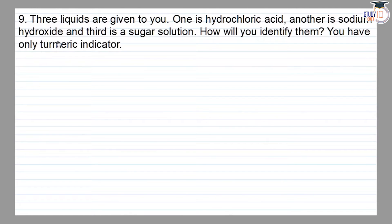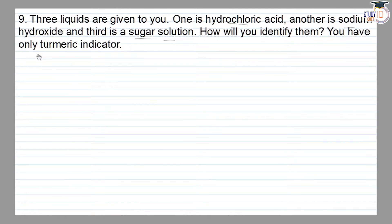Class 7, NCERT Chapter 5, Question 9. Three liquids are given to you: one is Hydrochloric Acid, another is Sodium Hydroxide, and the third is Sugar Solution. How will you identify them? You have only Turmeric Indicator. Let's start.